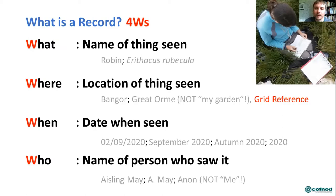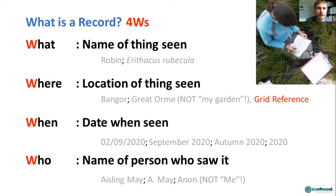Then 'who' — tag the record with your name. You can put it in various formats: your full name or a contraction. If you don't know who recorded it, put it down as 'anon' — that's quite useful if you're decanting records out of historical books where you don't necessarily know the original recorder but still want to lodge the record. Going back to the 'my garden' element — don't just put 'me' either, as that's not really useful. Think about who's going to look at your records in the future and make them as understandable to everybody as possible.